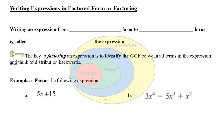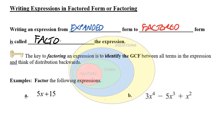So now we're going to work on writing expressions in factored form, or factoring. If we want to take an expression from expanded form to factored form, this is called factoring the expression. The key to factoring an expression is to identify the greatest common factor between all the terms in the expression, and then think of distribution backwards.